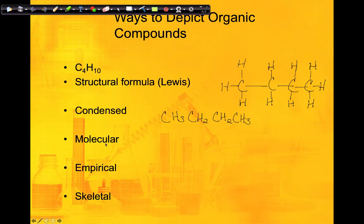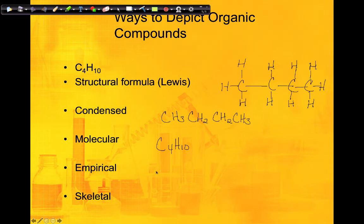The molecular formula shows the number of atoms in the compound — in this case, four carbons and ten hydrogens, so C₄H₁₀. The empirical formula is the smallest whole number ratio. Since four and ten can both be divided by two, the empirical formula would be C₂H₅, which cannot be reduced further.